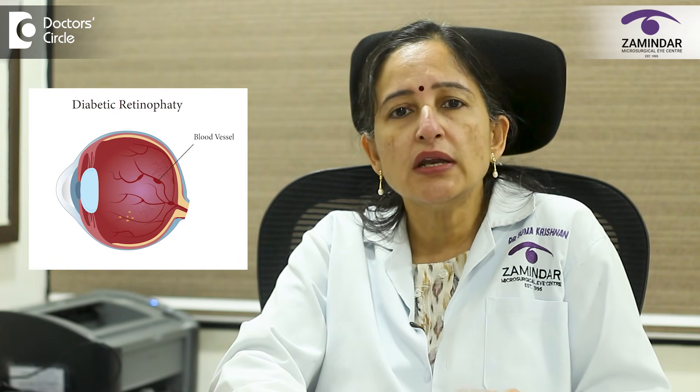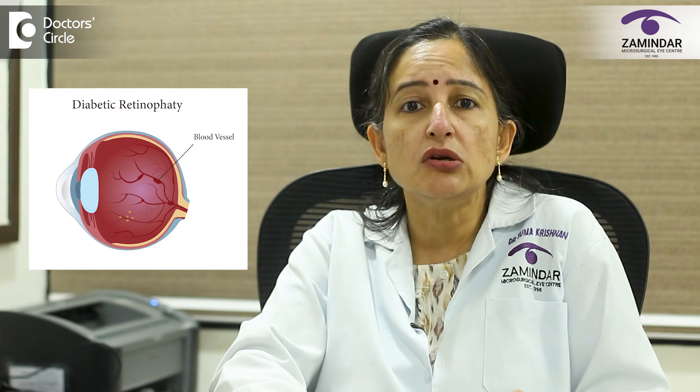While PVD itself is usually harmless, it can sometimes pull too hard on the retina leading to retinal tears. If not identified on time, these tears can even lead to retinal detachment resulting in sudden loss of vision. Bleeding in the eye due to conditions like diabetes or diabetic retinopathy can also cause floaters. When there is bleeding in a patient with diabetes, it invariably means that the diabetic eye disease is quite advanced and needs to be treated urgently.